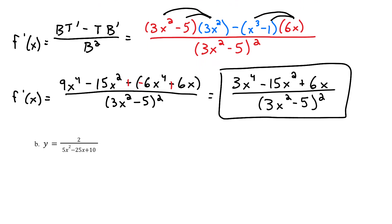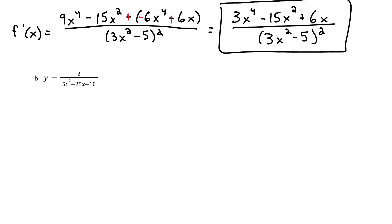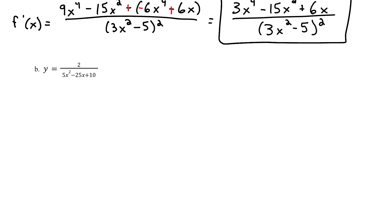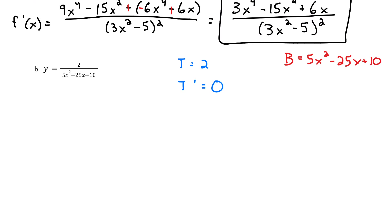Let's move on to our next example: y equals 2 divided by 5x squared minus 25x plus 10. Off to the side, let's write t equals 2. This one's a little weird because 2 is a constant, so its derivative t prime is 0. B equals 5x squared minus 25x plus 10, and b prime equals 10x minus 25.